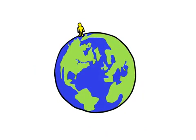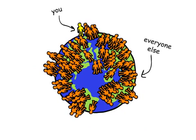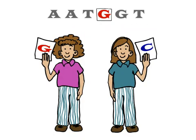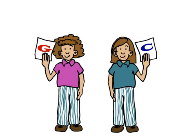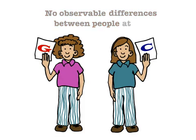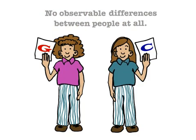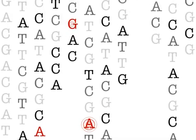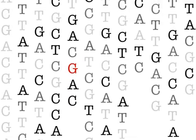There are around 10 million SNPs in the human genome, which account for many of the genetic differences between you and everyone else on the planet. Some SNPs account for differences in appearance; others can affect how we develop diseases or respond to drugs. Most SNPs, however, seem to lead to no observable differences between people at all.